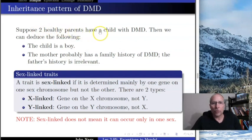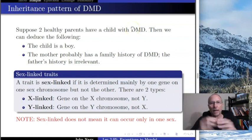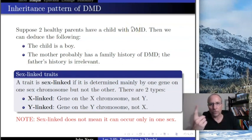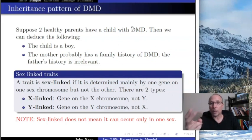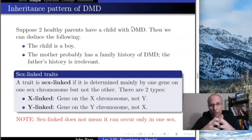Suppose you have two healthy people and they have a child with DMD. If that's all you know, I can tell you two things: first, that child is a boy; and second, the mother, whether she knows it or not, almost certainly has a family history of this disease somewhere in her family.